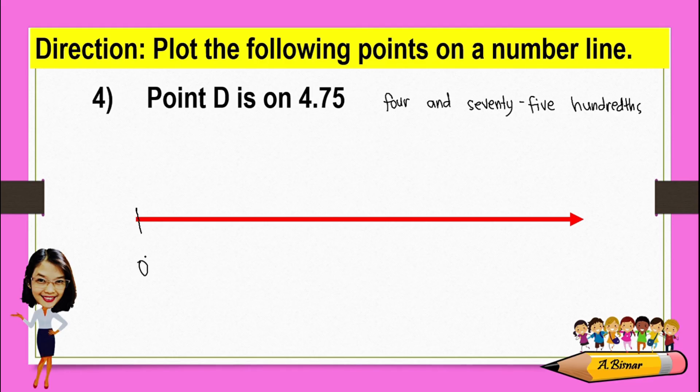So we have 0, 1, 2, 3, 4, and 5. However, this is 75 hundredths. If we divide this into 100 parts, it will take too much time and effort.